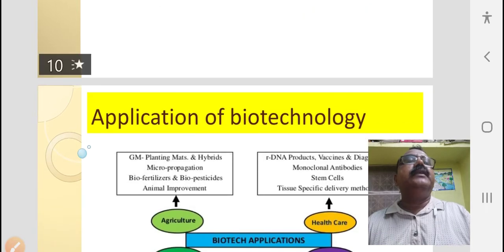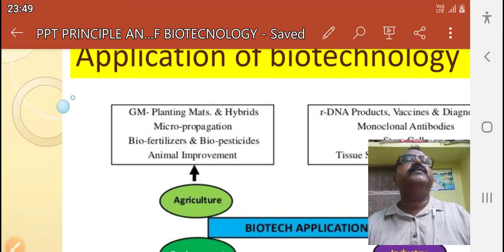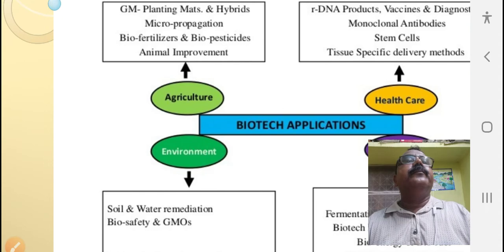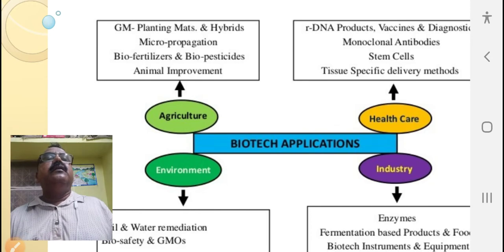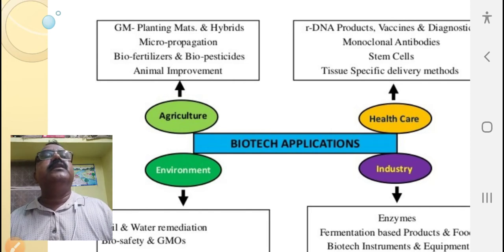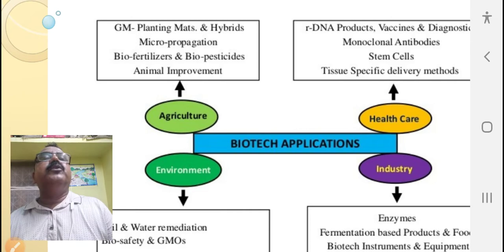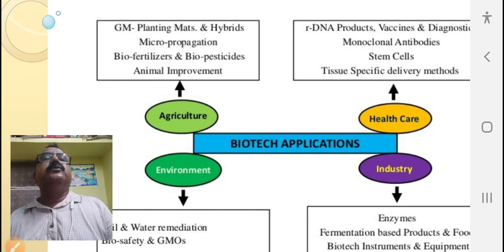Biotechnology is fruitfully applied nowadays in many areas: in agriculture, in healthcare, in environment, and in industry. In agriculture, it is used for the production of genetically modified crops to produce hybrids, for micro-propagation, tissue culture process, for the production of bio-fertilizers and bio-pesticides. It is also used for the improvement of animals, for their growth and multiplication.